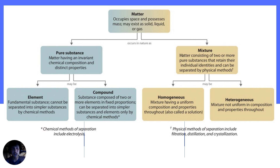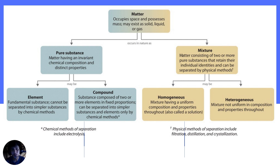Matter occupies space and possesses mass, and may exist in solid, liquid, or gas states. Matter is divided into two categories: pure substance and mixture. A pure substance has an invariant chemical composition and distinct properties. A mixture consists of two or more pure substances that retain their individual identities and can be separated by physical methods. Pure substance is further divided into element and compound.